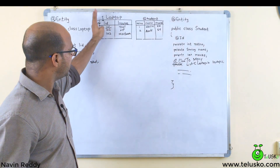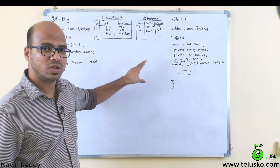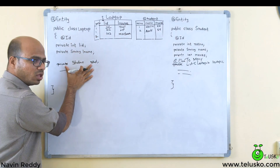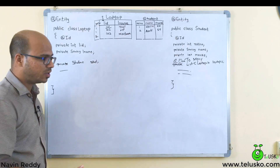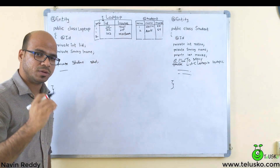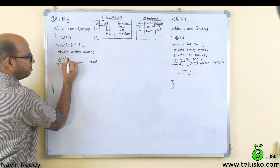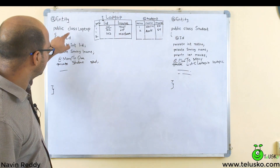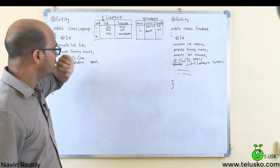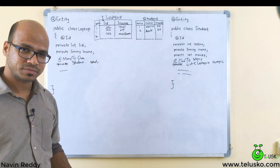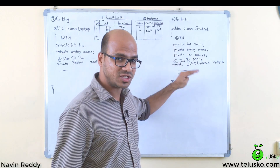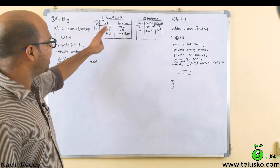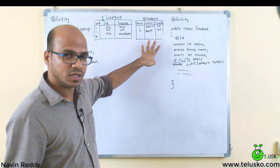Without adding private Student stud to the Laptop class, the output would be a laptop table without the roll number column, the student table, and an extra student_laptop mapping table. But if you add private Student stud and annotate it with @ManyToOne, the Laptop class creates the roll number column itself from the Student table — giving just two tables without the extra mapping table.